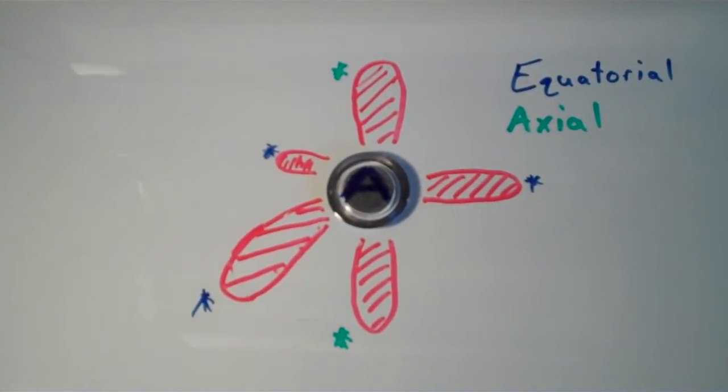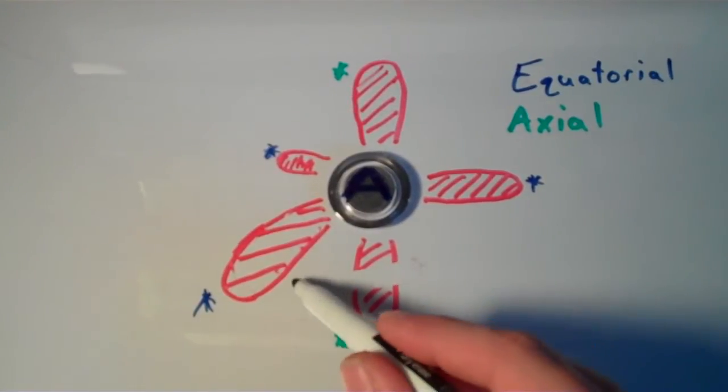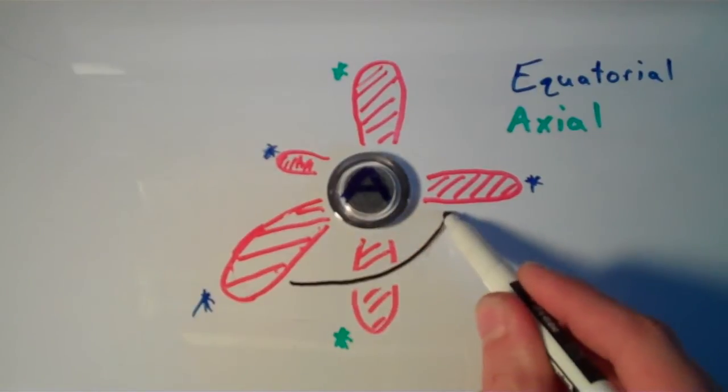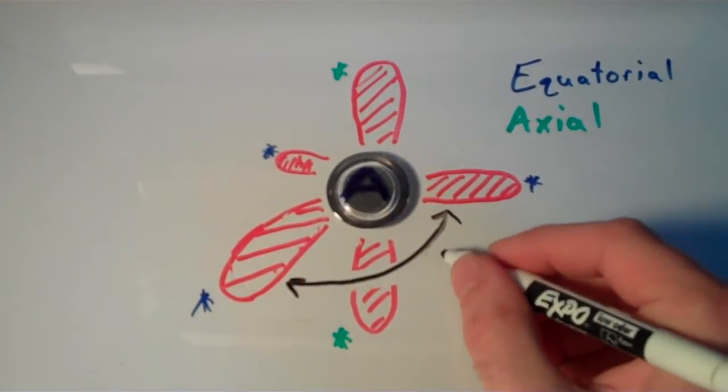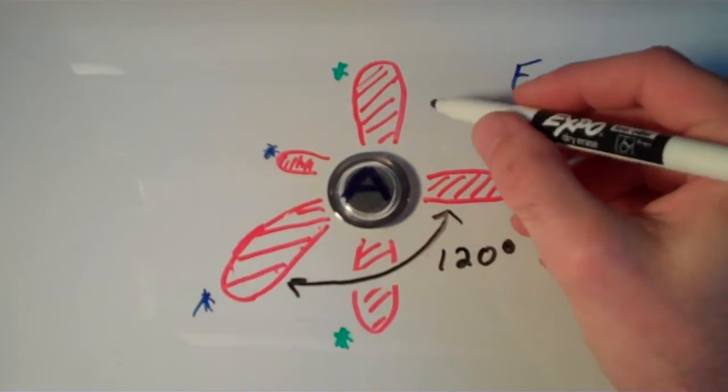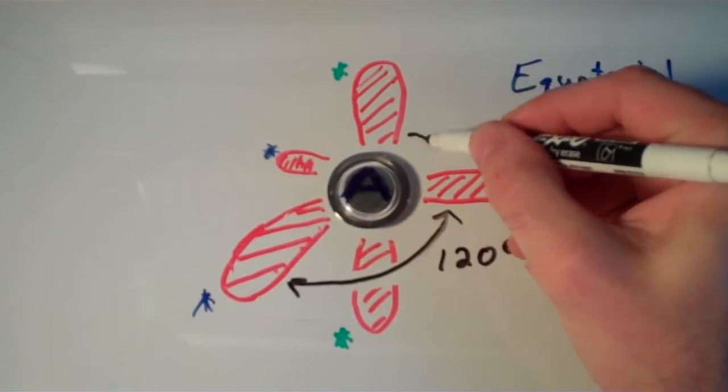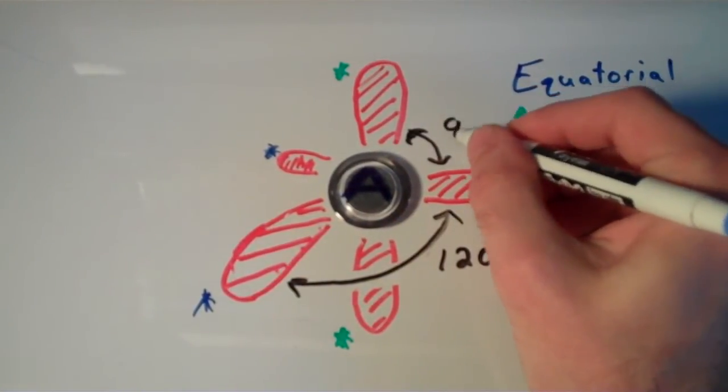Interestingly enough, the angles between the electron groups are not all equivalent. The angle between two equatorial groups, so say the angle between this group and this group, is 120 degrees. While the angle between an axial group and an equatorial group is 90 degrees.